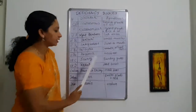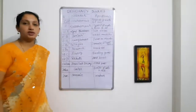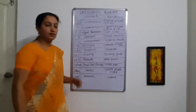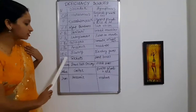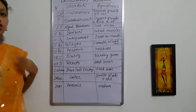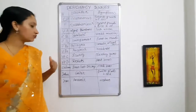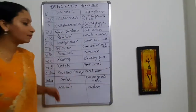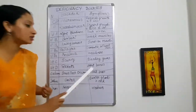Vitamin C deficiency causes scurvy. You have to include vitamin C foods in your diet, like citrus fruits. The main symptom is that gums are bleeding because of this deficiency. Vitamin D — vitamin D and calcium are always related with bones and teeth, as we studied in part 1. Vitamin D deficiency causes rickets, where the bones become soft and bend.